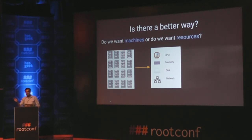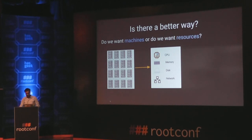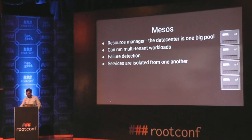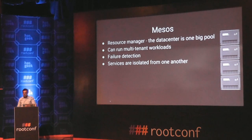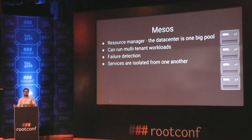Instead of static partitioning and silos, the question becomes: do we think in terms of number of machines, or in terms of resources like CPU, memory, and disk? This is where Mesos comes in. Mesos allows you to treat all your machines in your data center as one big resource pool. If you want to run a service — any Apache daemon, cron job, or batch job — you request CPU, memory, and disk resources from Mesos. Mesos finds where it needs to run, matches constraints, starts the service, and monitors it.